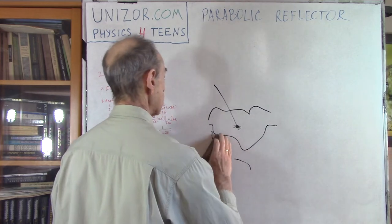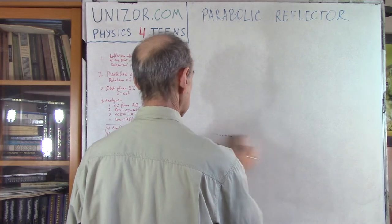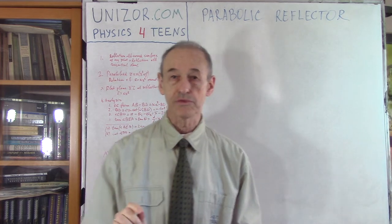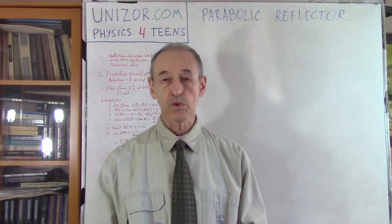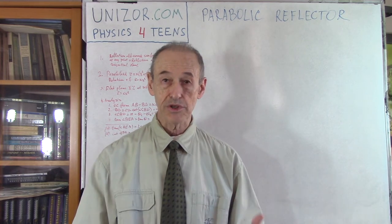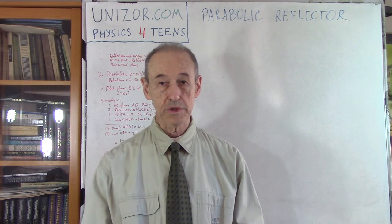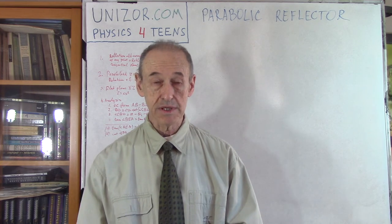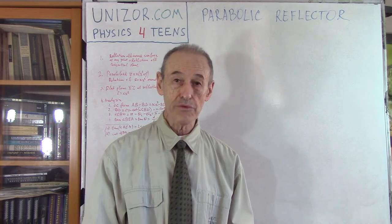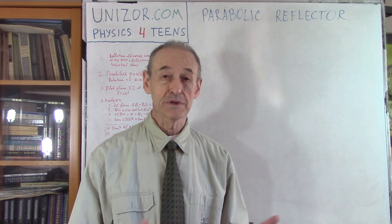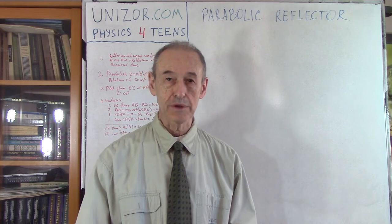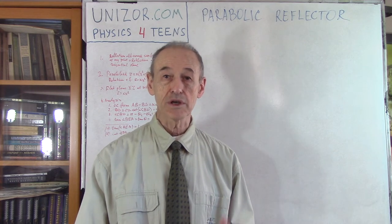Now, being done with this, we will talk about a specific curved surface called a paraboloid. It has a lot of practical applications, which I will talk about at the very end of this lecture — that's why I chose it. And at the same time it's curved, so it fits the scope of reflection of curved surfaces.